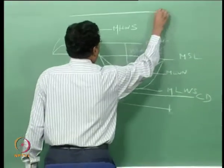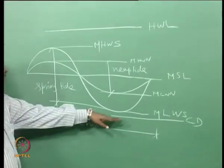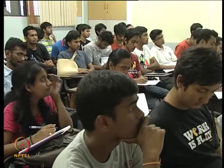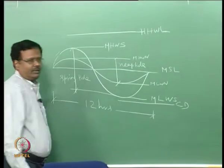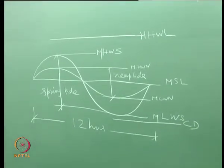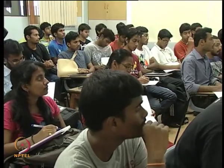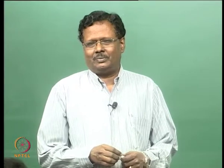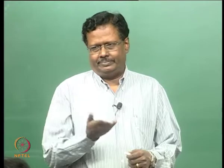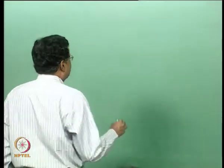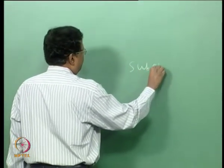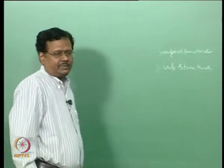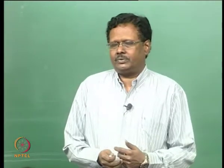We also need the highest high water level. The chart datum is below the low water level, and we can put highest high water level also. The engineering requirement is that the bottom of the deck beam of the superstructure should be above the highest high water level. We have two structures: one is the substructure and another is the superstructure, which consists of deck beams and slab.